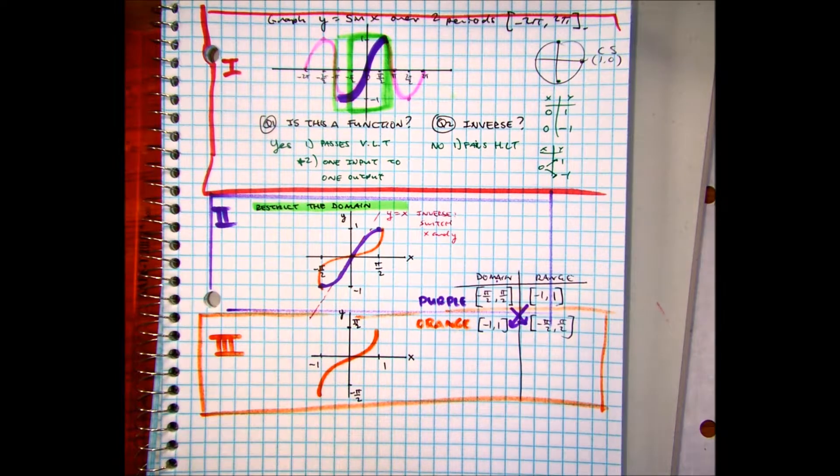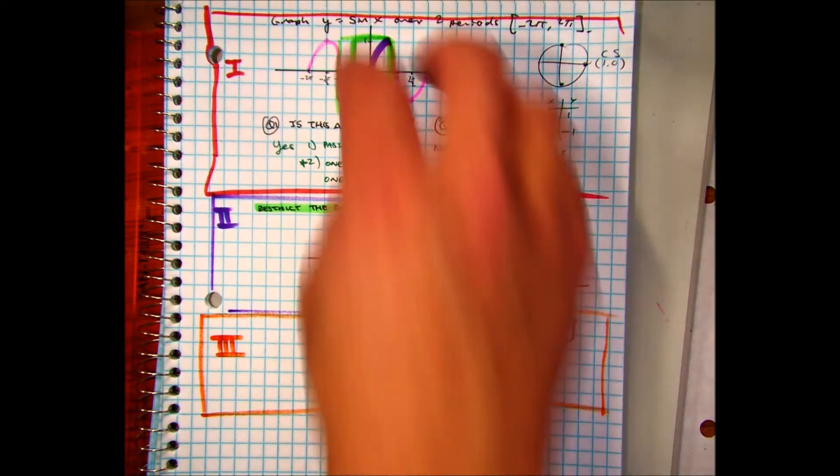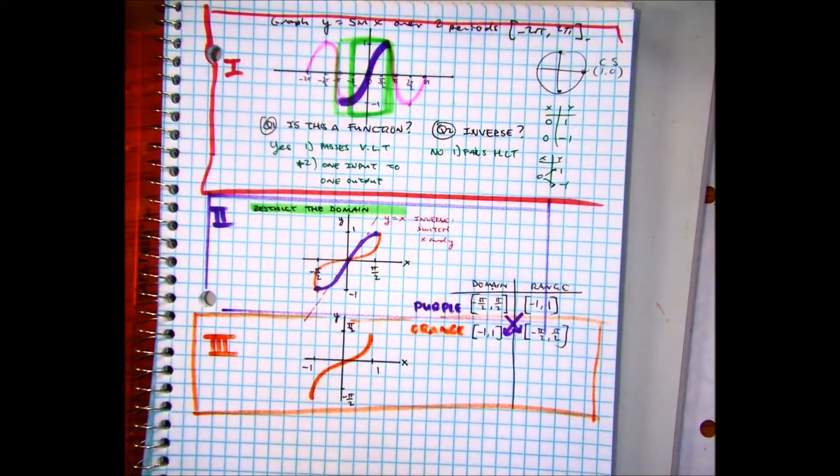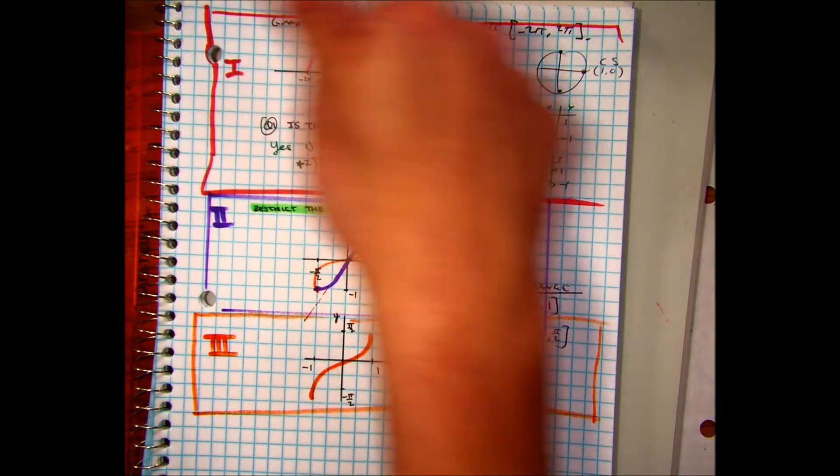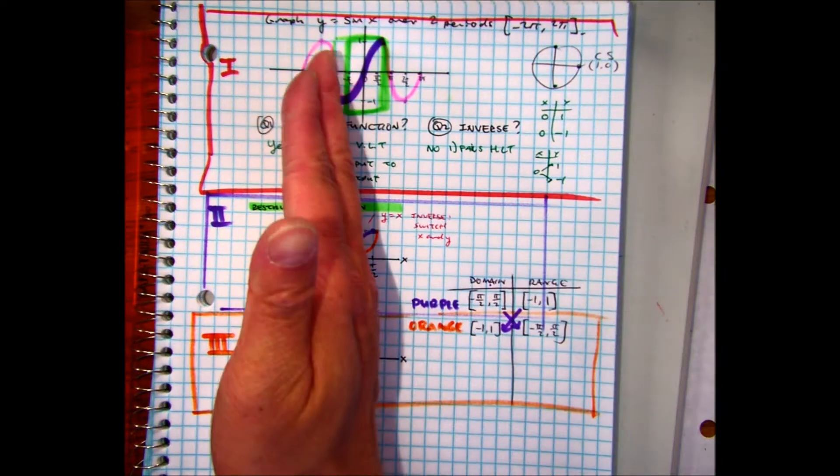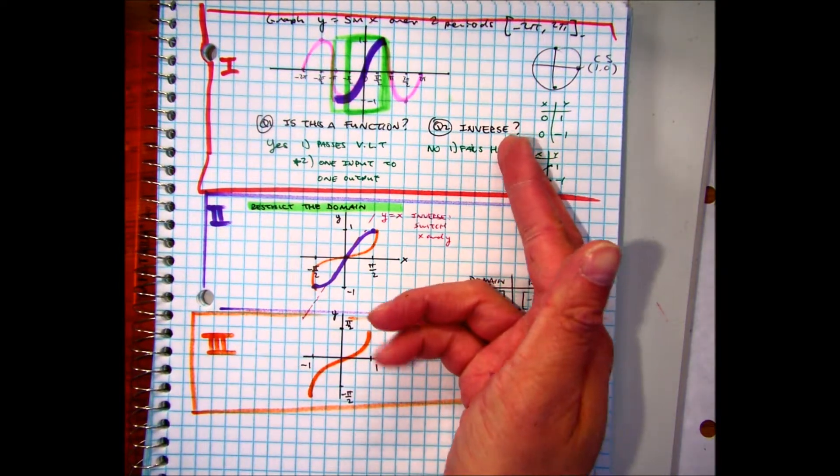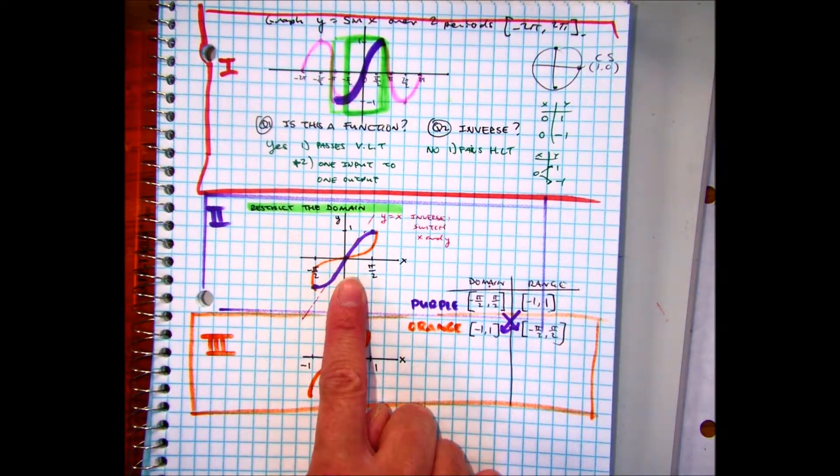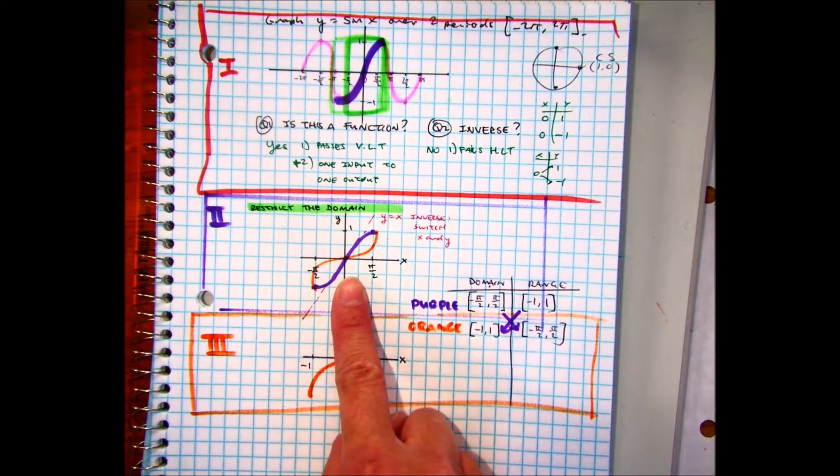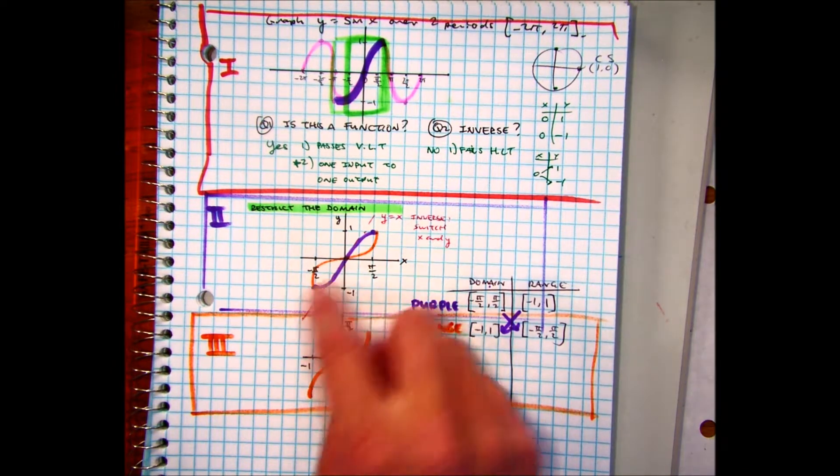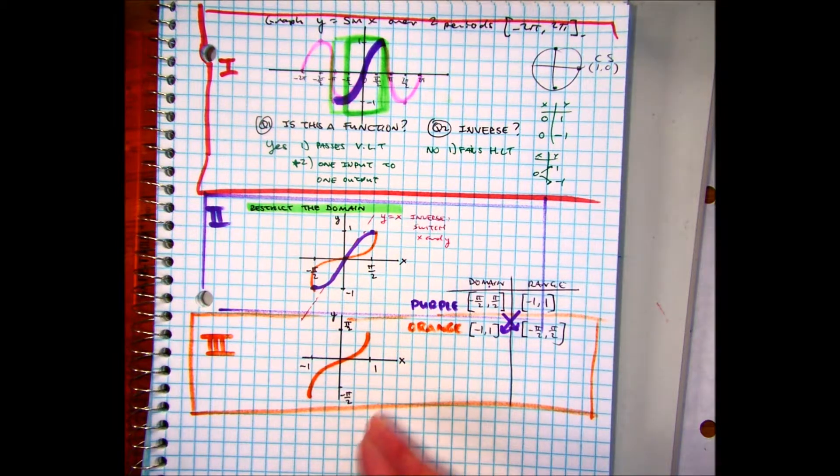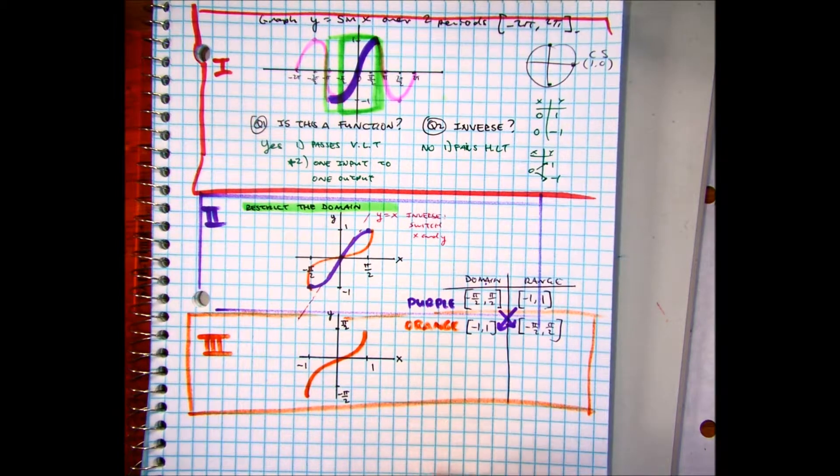All right. You might be asking, Mr. A, you just took me through a long journey of red, purple, and orange. What was the purpose? The purpose was a chart that we're going to get. So basically what I did, we graphed the sine. It's a function, but I can't take the inverse. If I restrict the domain in green, then I get this graph in purple. If I want to take the inverse of the purple, I get the orange graph. And this tells me something about sine and its restrictions.